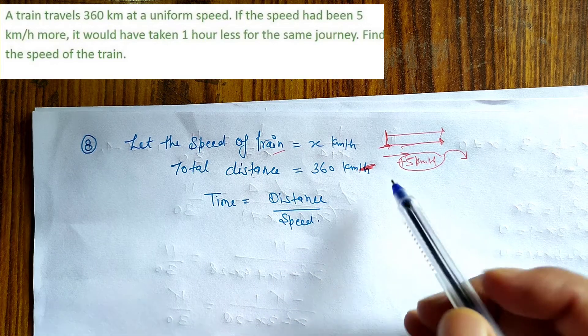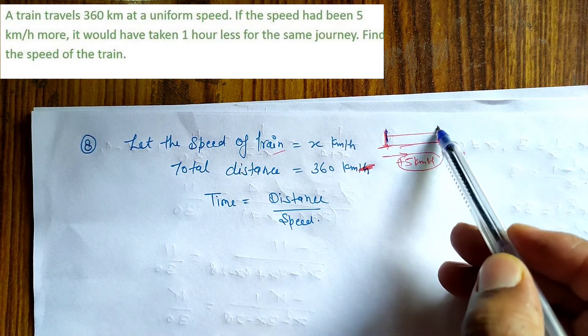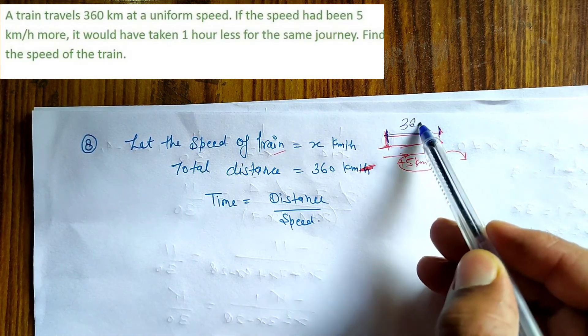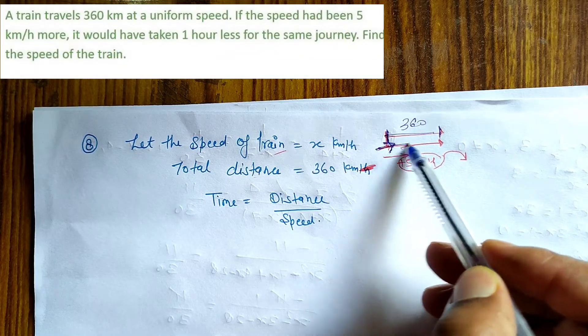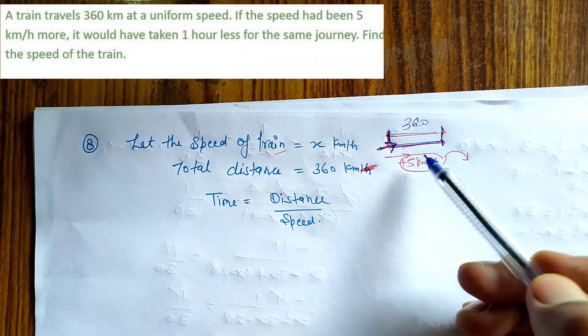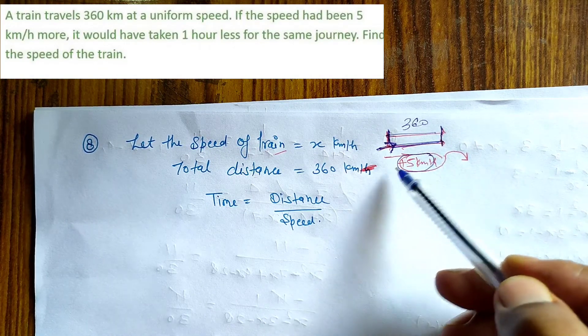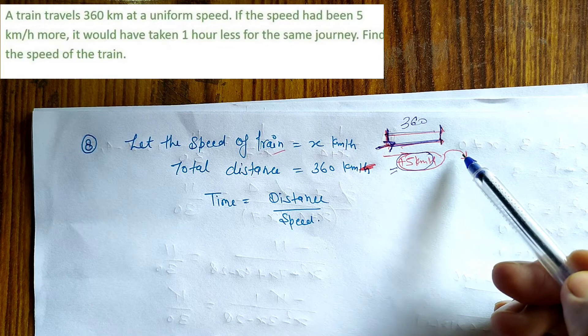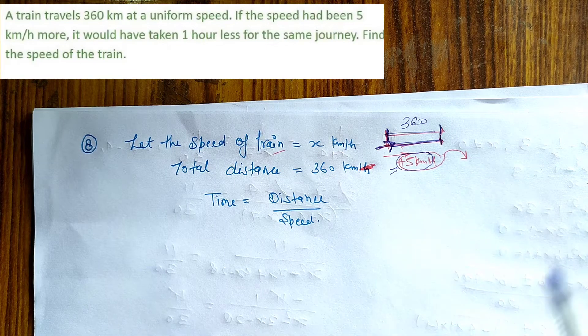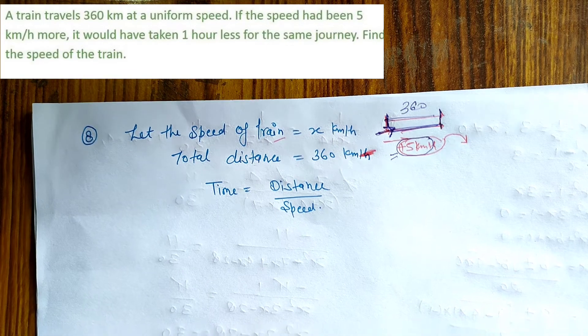So dekho, yahan pe koi train hai. Distance hai 360. Yahan pe koi car hai ya journey ko complete karti hai normal speed se. Aur jab apni speed mein 5 kilometer per hour add karti hai, to wo is journey ko 1 hour pehle complete karti hai. So ab hum karengi question ko start.